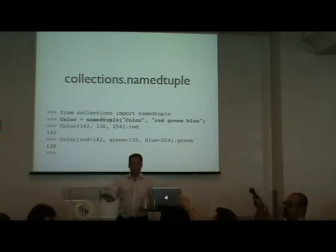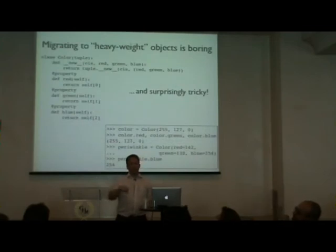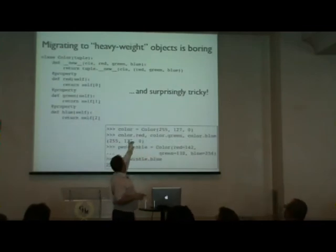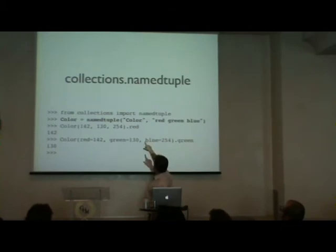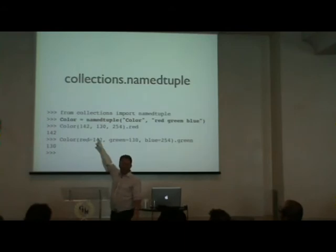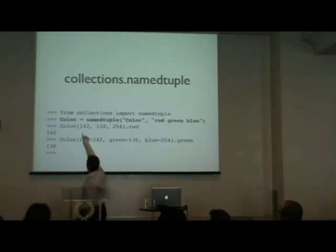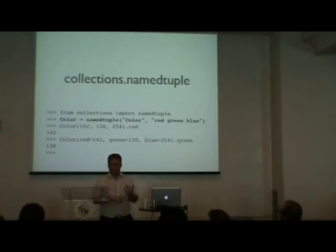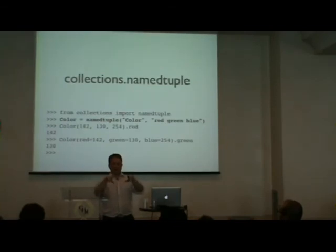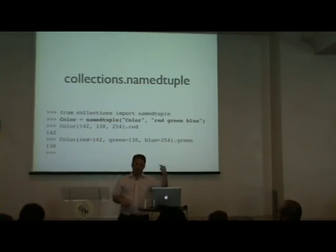Question: what's the purpose of the first argument — the type name — in namedtuple? Every Python class has its own __name__ attribute. The first argument is the internal name stored in the type. You could assign the result to a different variable name, but for introspection — looking at obj.__class__.__name__ — you want to know what type it actually is. So that's where that name comes from.